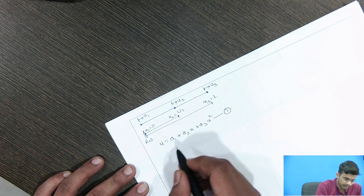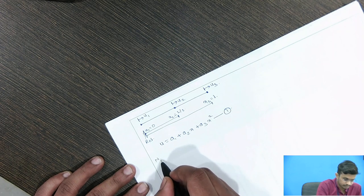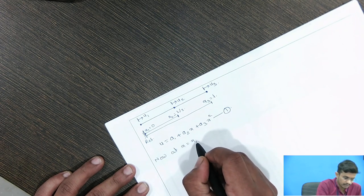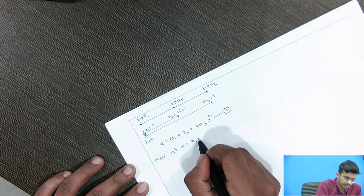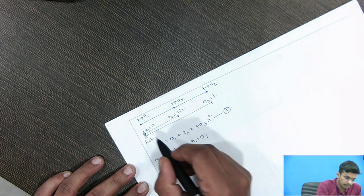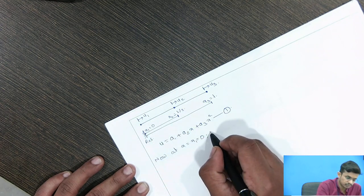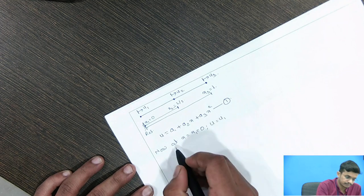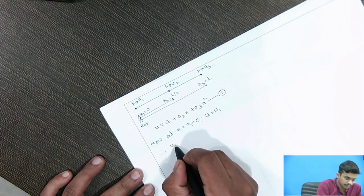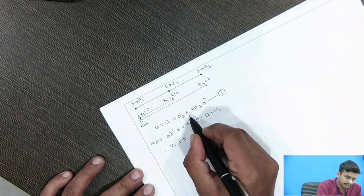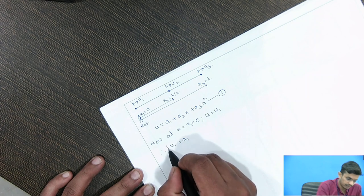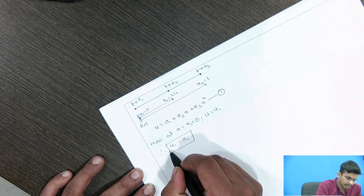Now we will apply the boundary conditions. At X equals X1, which is 0, the value of U is U1. From equation 1, substituting X=0, we get U1 equals A1, since the other terms are eliminated. This gives us the value of our first constant: A1 equals U1.